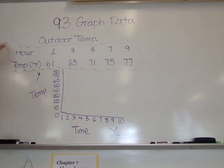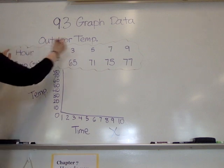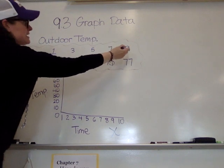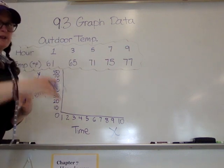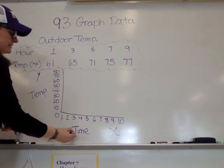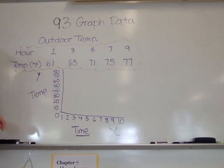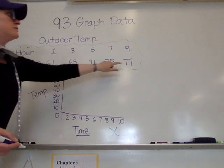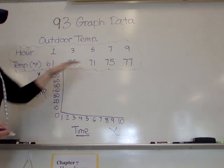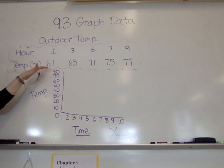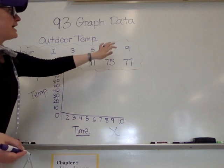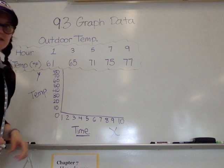You're taking your two bits of information. So you have the hour - hour 1, hour 3, hour 5, hour 7, hour 9. So this data was collected over nine hours of time. Time is on your x-axis across the bottom here. Your other bit of information is the temperature in degrees Fahrenheit. So the temperature taken over nine hours worth of time starting at 61 degrees, 65 degrees, 71 degrees, 75 degrees and then 77 degrees.